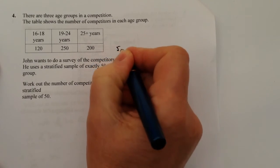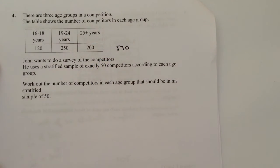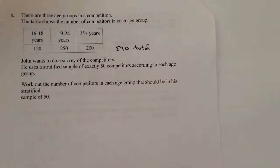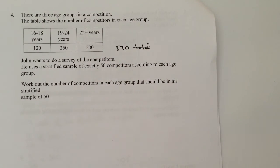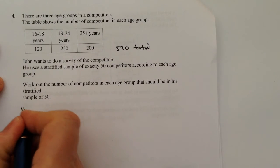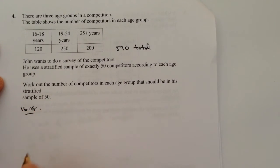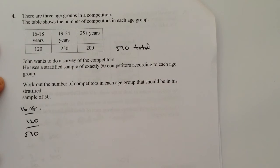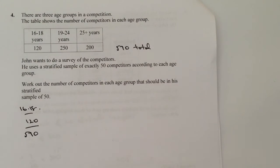Most of these stratified sampling questions tend to follow the same sort of pattern. What we're looking to do is create a fraction. In this case, if we're looking for the 16 to 18 age group, it's going to be 120 out of the 570 in total of the competitors, and that's the fraction we're going to be stratifying, which is of 50 that we've got within our sample.